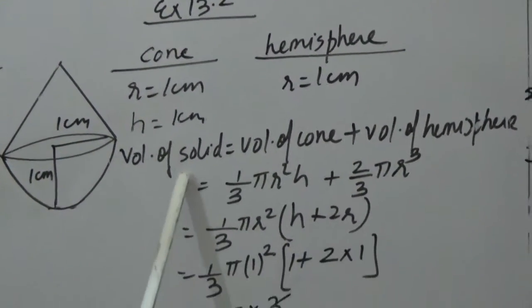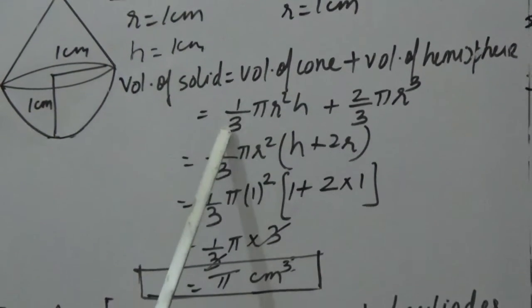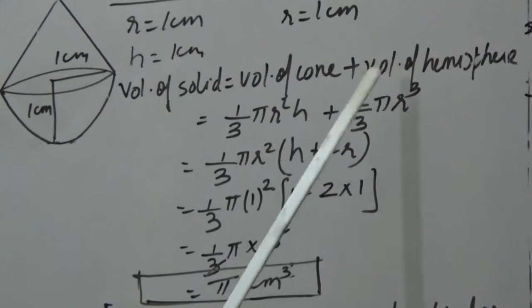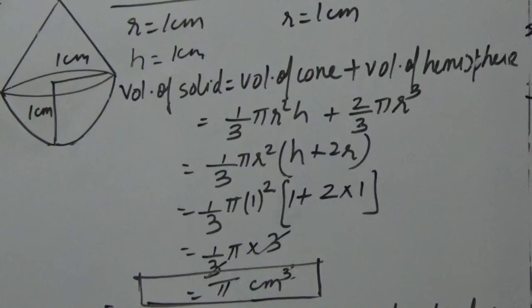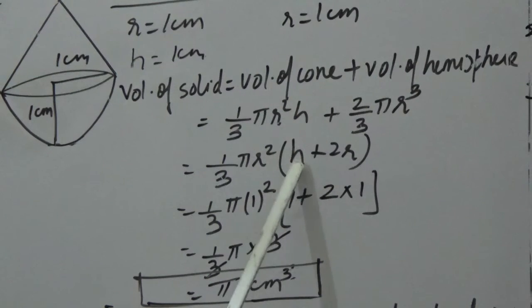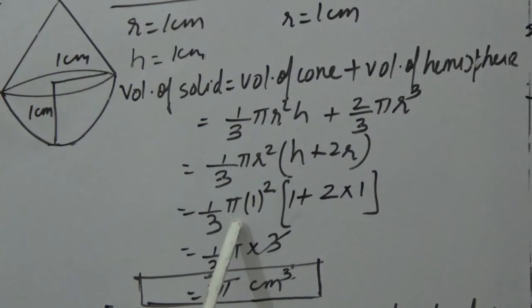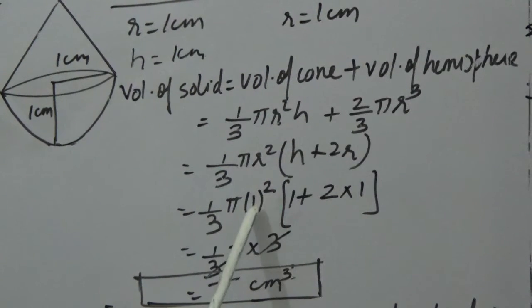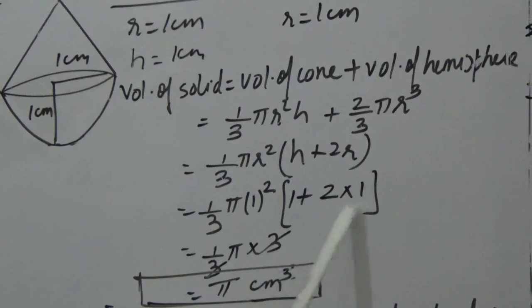Volume of cone is (1/3)πr²h and volume of hemisphere is (2/3)πr³. Taking 1/3 common, we get (1/3)πr²(h + 2r). Substituting r = 1, h = 1: (1/3)π(1)(1 + 2) = (1/3)π × 3. The 3's cancel, giving us π cm³ as the volume of the solid.